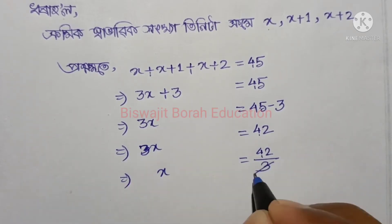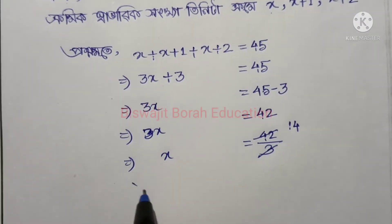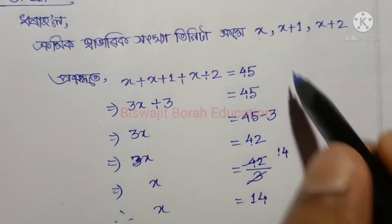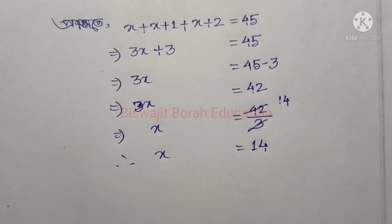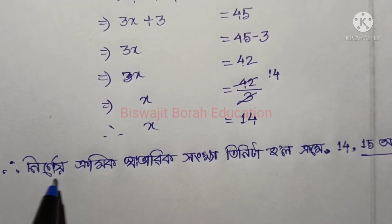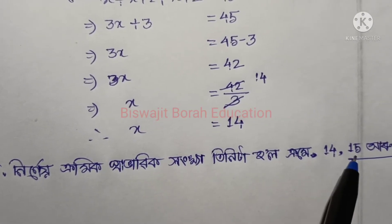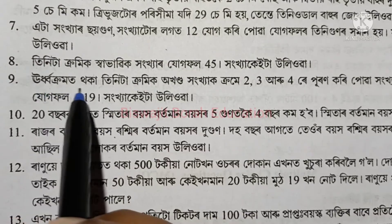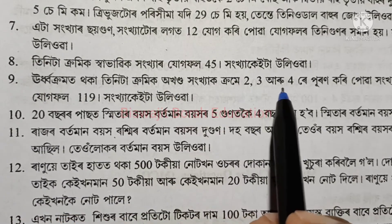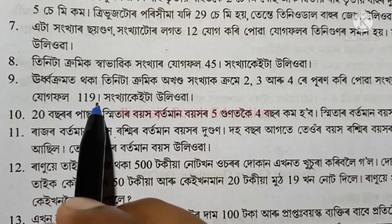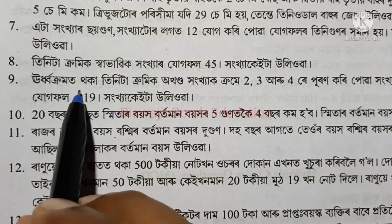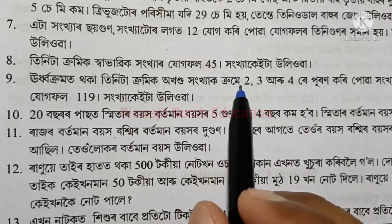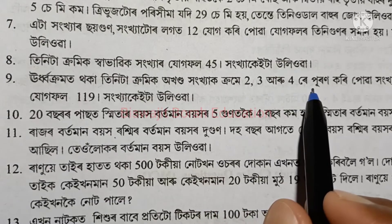So 3x plus 3 equals 45. Solving: 3x equals 42. ક્રમ અનુહારે ડુઈ તીની — the two and three in sequence are filled in. Completing the solution step by step.